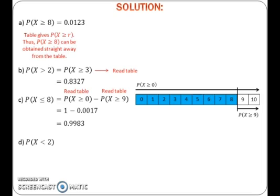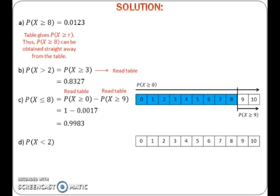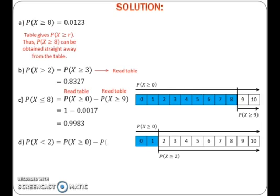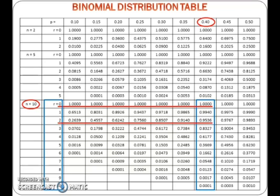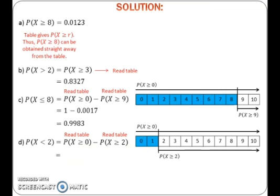To find the probability of x less than 2, first draw a number line from 0 to 10. After that, mark the part that we want, which is 0 until 1. To get this, take the probability of x greater than or equals to 0 and cut off the probability of x greater than or equals to 2. Read both values from the table and calculate the probability.